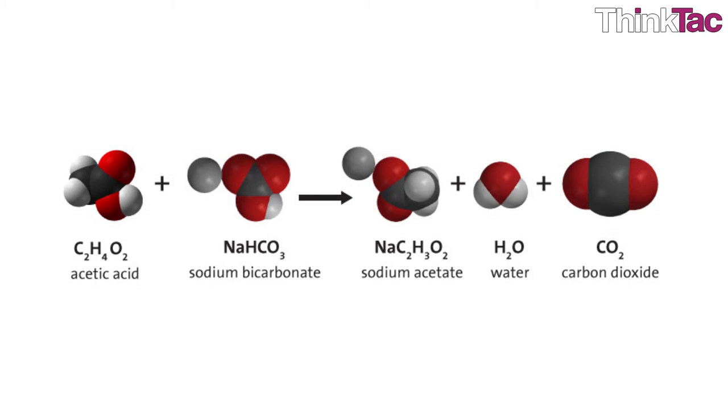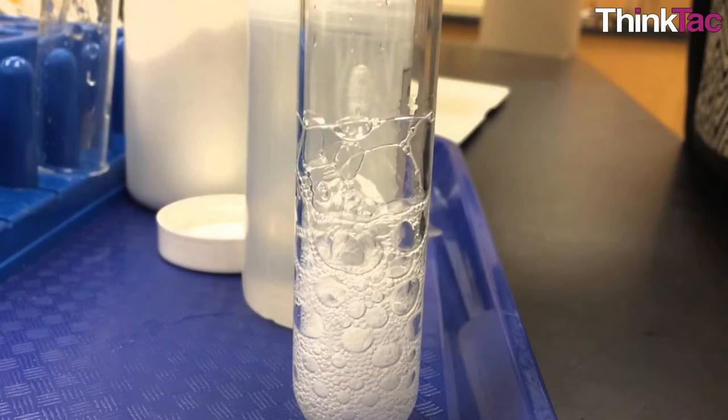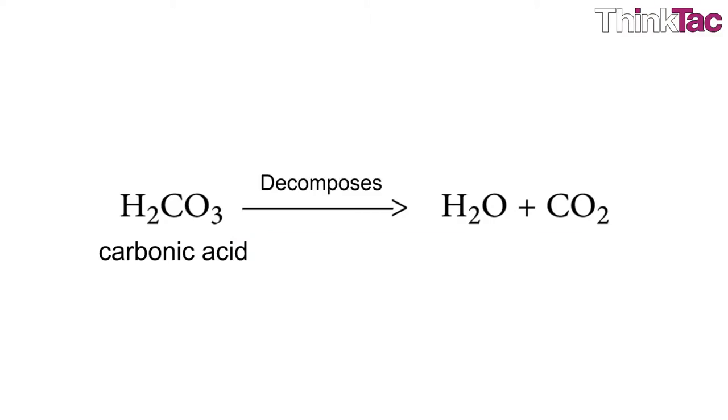So this is another example of a double displacement reaction which can be conducted easily at home by mixing baking soda, which is nothing but sodium bicarbonate, and vinegar, which is mostly acetic acid. This produces sodium acetate and carbonic acid. While doing this experiment you will notice that there is a lot of fizz after the reaction occurs. This is because this neutralization reaction is a gas producing reaction where carbonic acid decomposes into carbon dioxide, forming the bubbles and the fizz, and of course water.